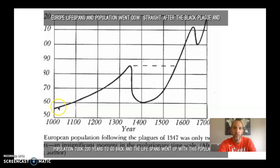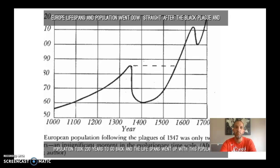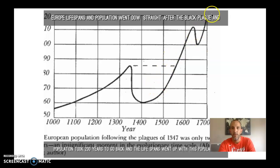Here's another chart, this one for Europe starting around the year 1000. It reaches about 85 million, then drops down to about 60 million. It takes all the way until the mid-1500s — over 200 years — to bring that population back up to its previous level. And then the population really takes off.